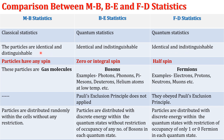Distinguishable means these particles we label just like A, B, C, D and so on. But in quantum statistics these are indistinguishable, so labeling is not possible.